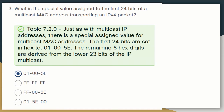Question three: what is the special value assigned to the first 24 bits of a multicast MAC address transporting an IPv4 packet? With multicast IP addresses, there is a special assigned value for the multicast MAC address. The first 24 bits of the IP multicast MAC address are set in hex to 01-00-5E. The remaining six hex digits are derived from the lower 23 bits of the IP multicast group address.